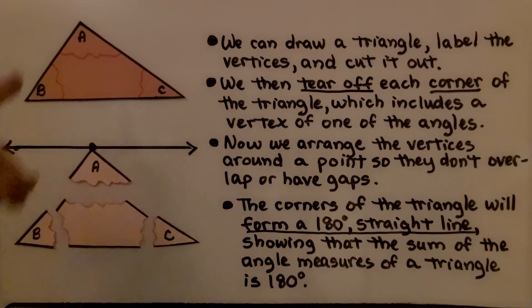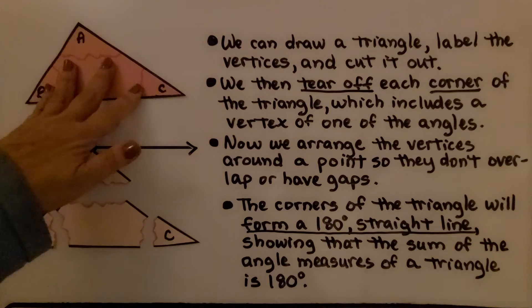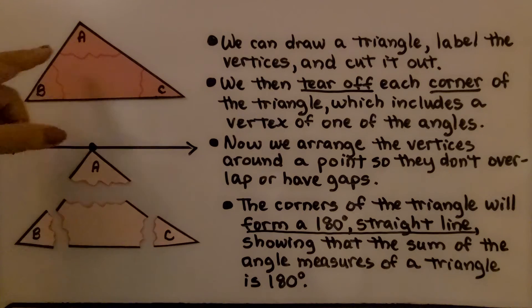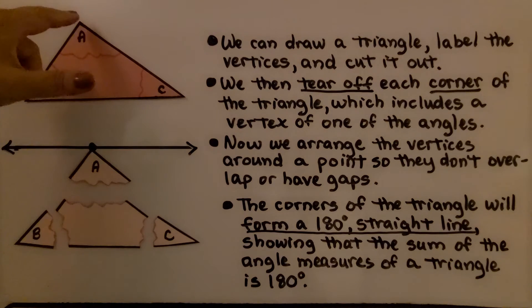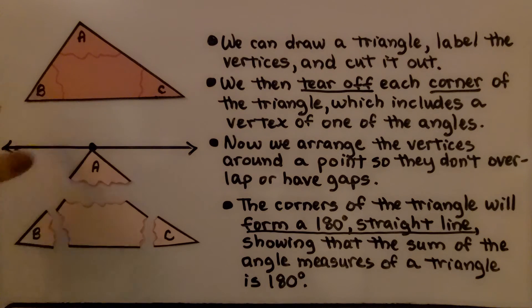We can draw a triangle, label the vertices, and cut it out. Then we tear off each corner of the triangle, which includes a vertex of one of the angles.